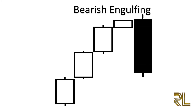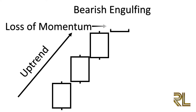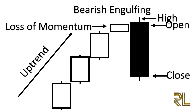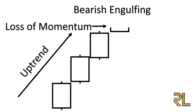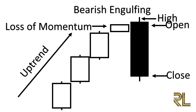The bearish engulfing bar is found in a preceding uptrend — a short white candle followed by a longer bearish black candle. The black candle opens higher and closes lower than the white candle, completely engulfing it. The psychology: the bulls push price all the way up following a prolonged uptrend, then the bears open above the high of the previous bullish move. The bulls then lose momentum, the bears take charge and close below the previous candle — the bears have now fully overridden the bulls.